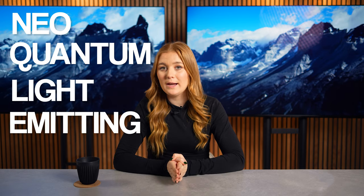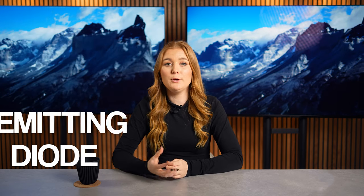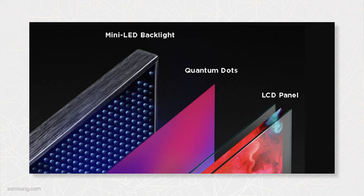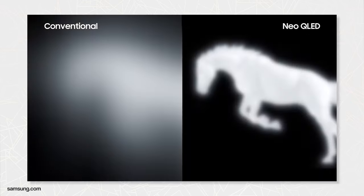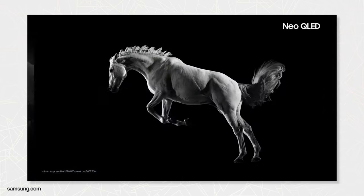Many QLED models also use mini LED backlight technology, which helps to reduce blooming and offers better contrast. Neo QLED is essentially Samsung's name for their mini LED QLEDs. So as expected, we now have thousands, if not tens of thousands, of smaller mini LED backlights to give a brighter picture, and we'll therefore get a higher number of dimming zones for significantly better contrast. Neo QLEDs are a good option for those looking for top tier picture quality, giving an immersive experience for movies, gaming and more.